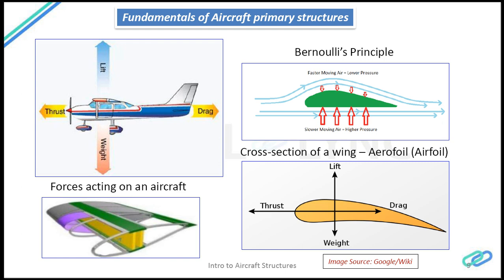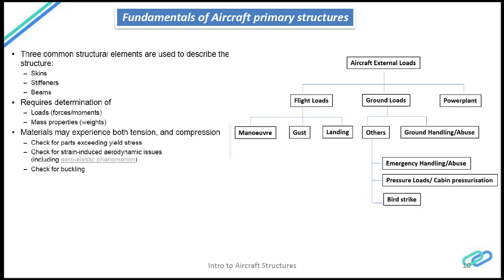I have also explained the physics behind the generation of lift. Whenever the aircraft is moving forward in the air stream, the air stream on the upper surface of the wing creates a low-pressure region, whereas the air stream on the lower surface creates a high-pressure region. Air molecules from the high-pressure region tend to move to the low-pressure region, thus generating lift. The cross section of the wing is referred to as an airfoil or aerofoil.